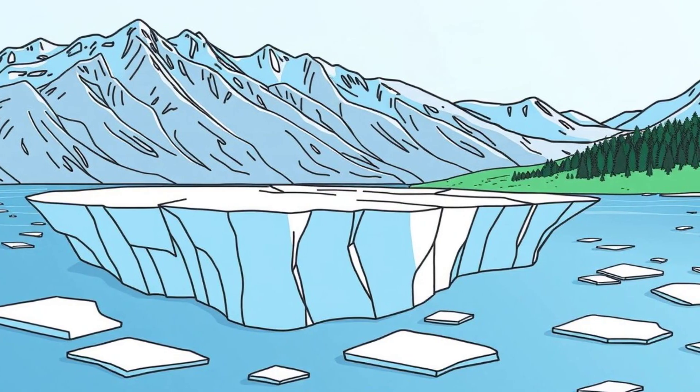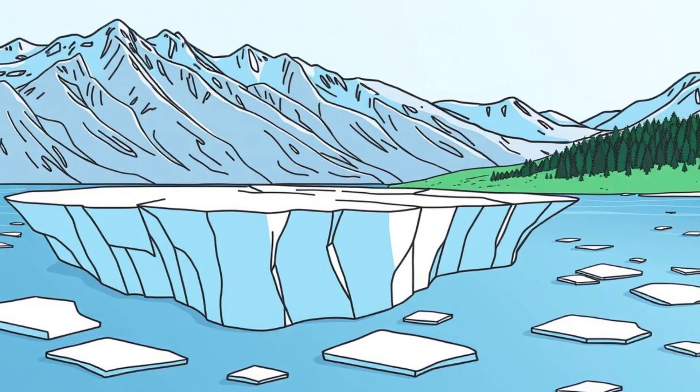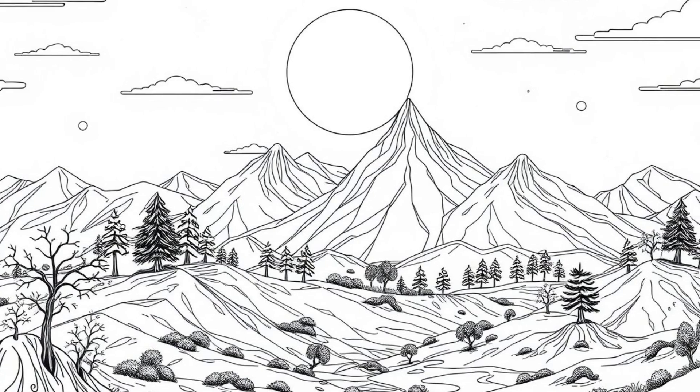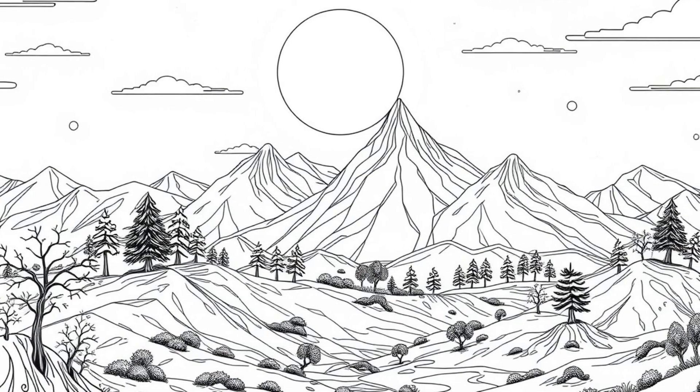When the ice melted, the crust began to rebound, a process known as post-glacial rebound. However, this process takes thousands of years, and parts of the land are still slowly rising today.